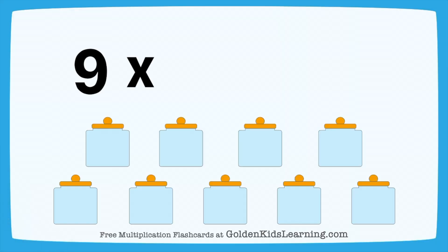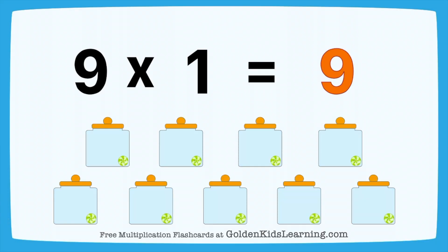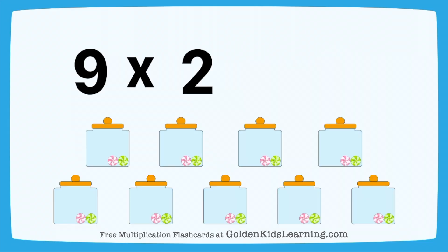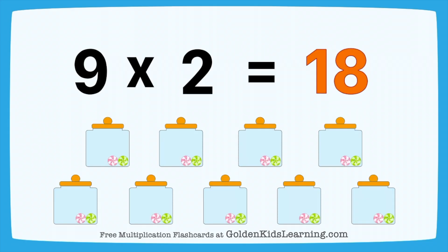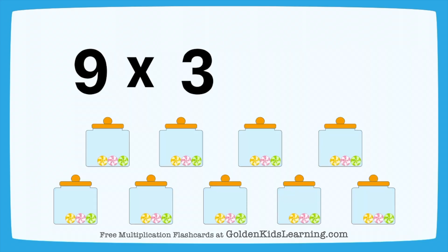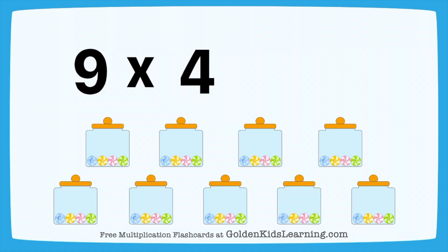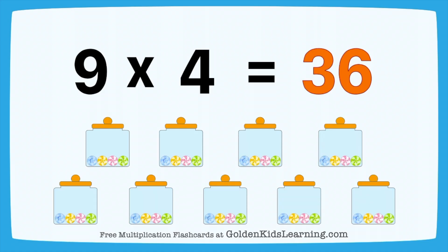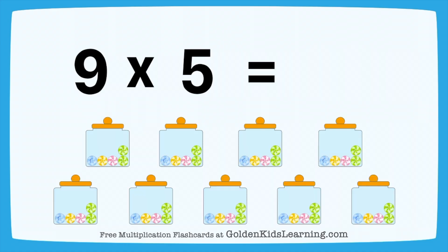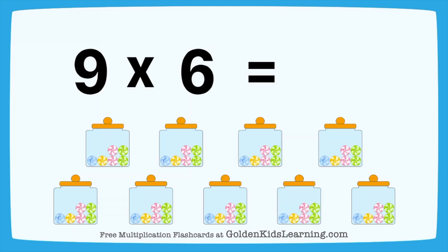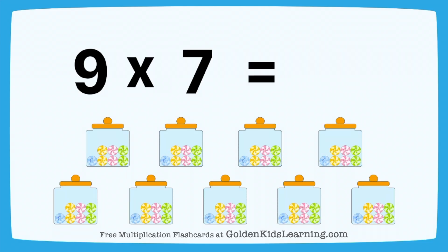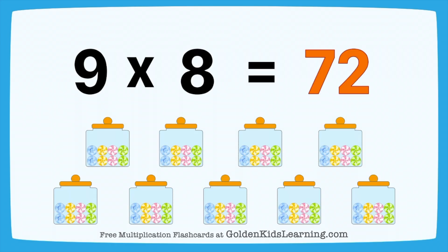9 times 1 equals 9. 9 times 2 equals 18. 9 times 3 equals 27. 9 times 4 equals 36. 9 times 5 equals 45. 9 times 6 equals 54. 9 times 7 equals 63. 9 times 8 equals 72.